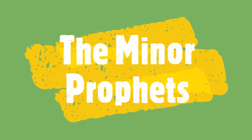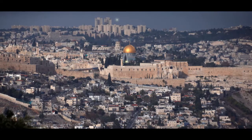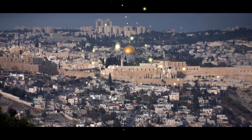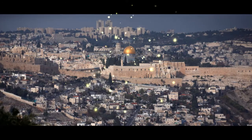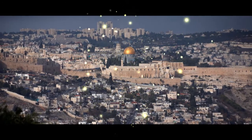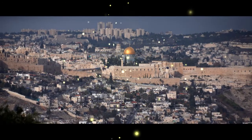The name 'Minor Prophets' goes back apparently to Saint Augustine, who distinguished the twelve shorter prophetic books as 'prophetae minores' from the four longer books of the prophets Isaiah, Jeremiah, Ezekiel, and Daniel. The twelve books of the minor prophets together do not equal in length the book of Isaiah alone.